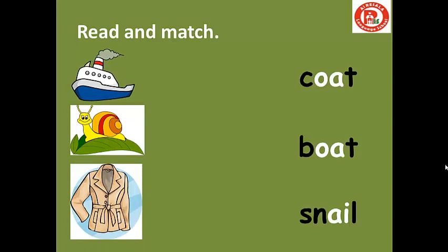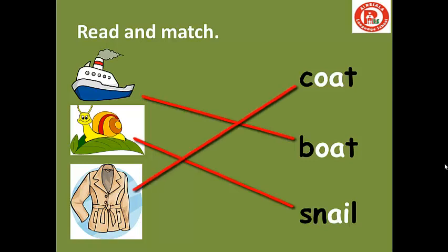We have boat, snail, and coat. What is the first picture? It's boat. So where is the word boat? Boat starts with B. Yes, excellent — it's the word in the middle. And then the next picture is snail. Snail starts with SN. So you will match snail. The last picture is coat. Coat starts with C, O, and T. So you match coat with the first word — it's coat.